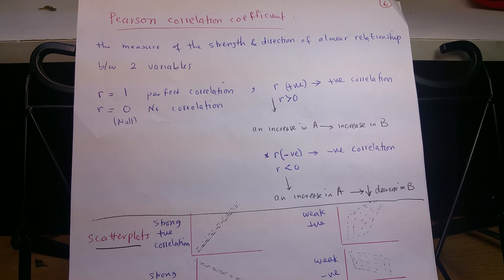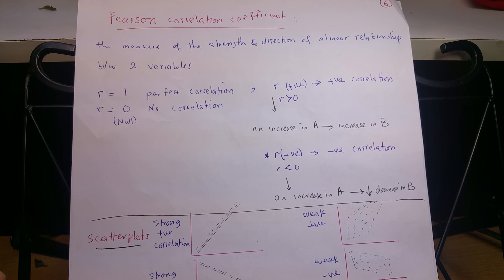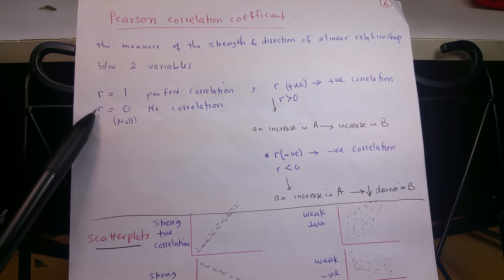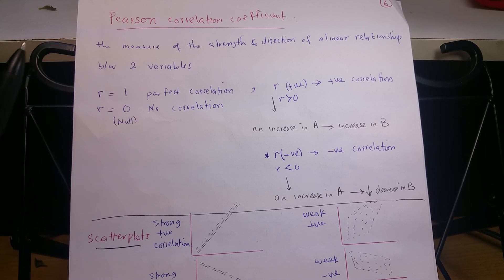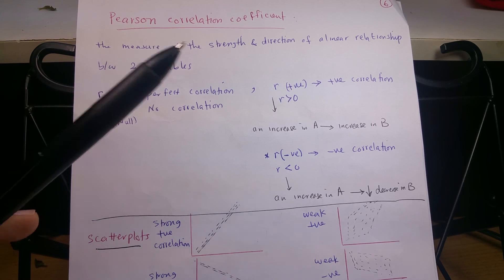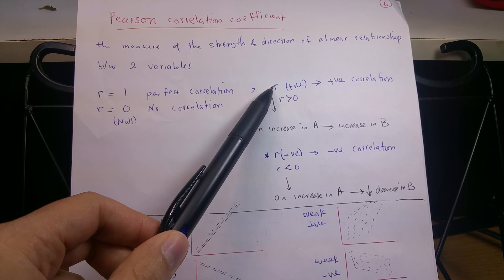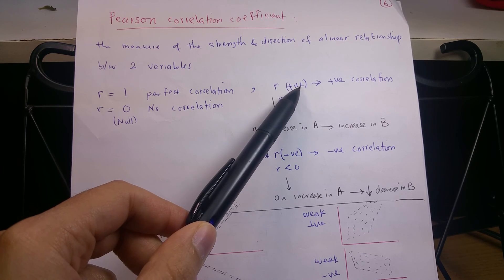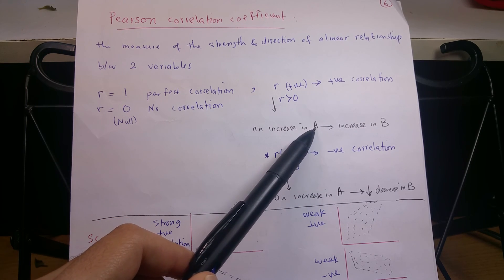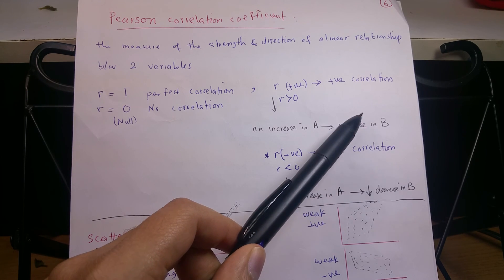Another concept is the Pearson correlation coefficient, which measures the strength and direction of a linear relationship between two variables. The R, which is the correlation coefficient, if it's zero, means there is no correlation between the two variables — that's the null value. If it's one, there is perfect correlation. If R is positive, there is a positive correlation, meaning an increase in the first variable leads to an increase in the second variable, so they go in the same direction.